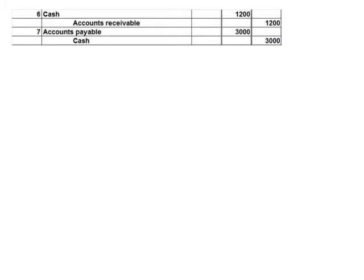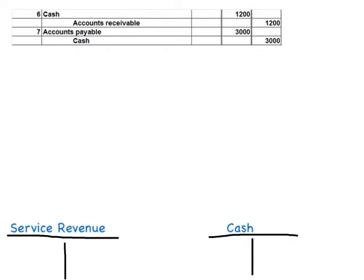Let's take a look at number eight. Eight says: perform tree trimming services for cash customers and immediately received $800. We're dealing with two accounts: cash, because we received cash, and service revenue, since we received money for doing our job. Cash is an asset account with a debit balance, and service revenue is a revenue account with a credit balance. We received cash for $800.